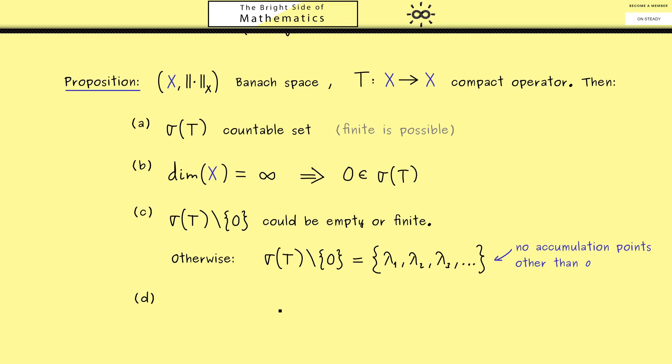Moreover in fact what we can conserve from the finite dimensional case is that these points here are in fact eigenvalues. So we don't know if 0 is an eigenvalue but all the other points are. So in other words such a point lambda here lies in the point spectrum of T. So this is a good thing because it means for compact operators you can still work with eigenvectors. Moreover as I said before the corresponding eigenspaces are still finite dimensional.